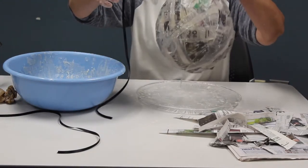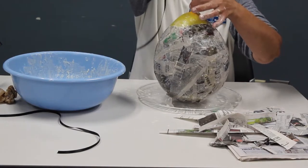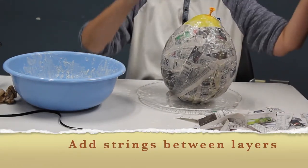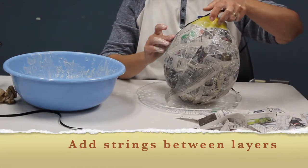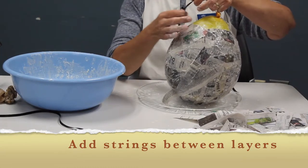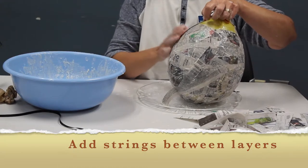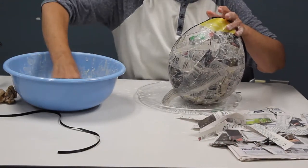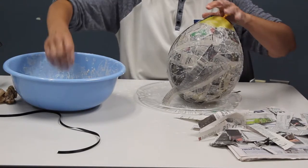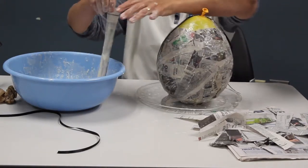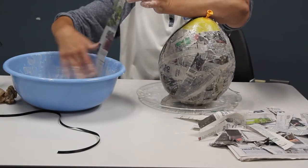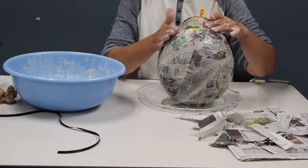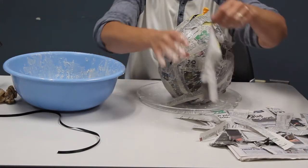So the next thing you want to do is you want to be able to hang it. So we have some lengths of ribbon. And I'm going to put that right there, maybe about halfway down. And then I'm going to cover that with strips in this first layer.